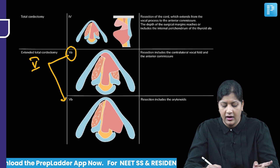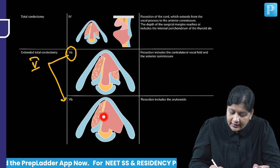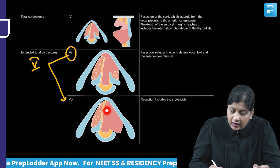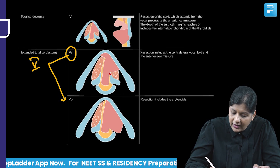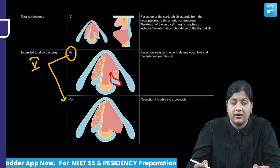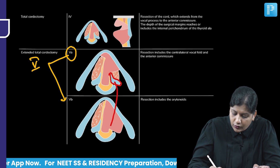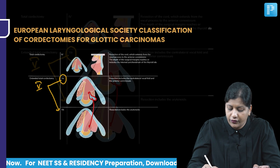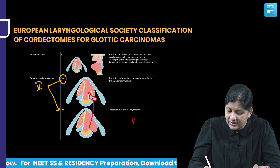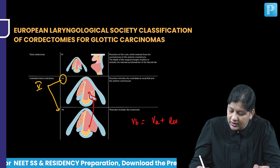What is 5b? In 5a, the arytenoid was never removed. But in 5b, there is resection of the arytenoid. So 5b is essentially 5a plus resection of the arytenoid.